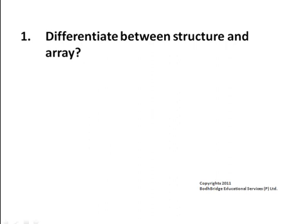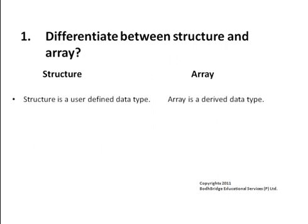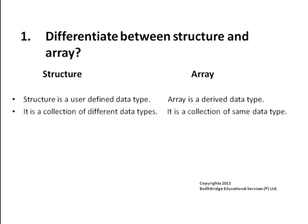Differentiate between structure and array. Structure is a user-defined data type whereas array is a derived data type. Structure is a collection of different data types whereas array is a collection of the same data type. Structure has dynamic memory allocation whereas array has static memory allocation.